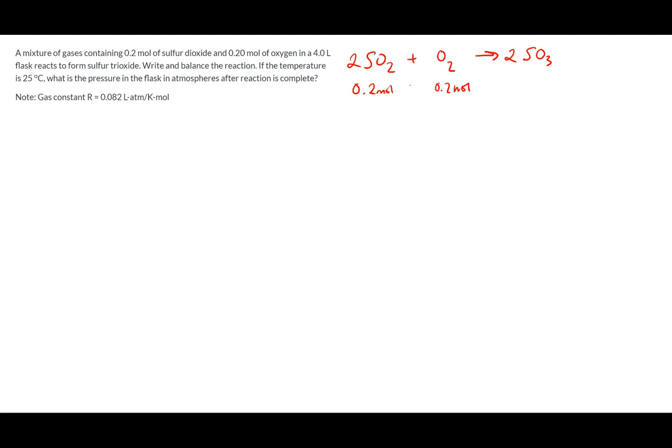We can do an ICE table. I is initial, so we start off with 0 moles of SO3, 0.2 moles of SO2, and 0.2 moles of O2. Because the SO2 is the limiting reagent, we're going to lose all of it, so we lose 0.2 moles of the SO2. For the O2, because it's not the limiting reagent, we only lose half the amount, so 0.1 moles of the O2. For the SO3, we gain 0.2 moles. The final amounts are 0 moles of SO2, 0.1 moles of O2, and 0.2 moles of SO3.